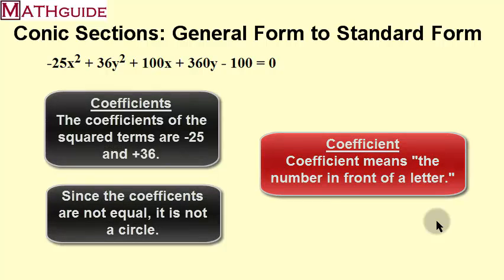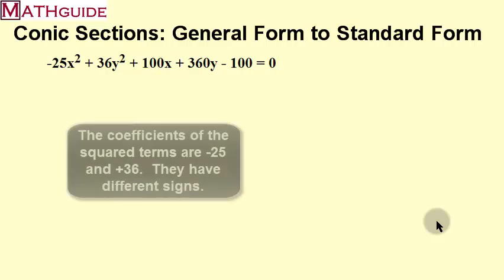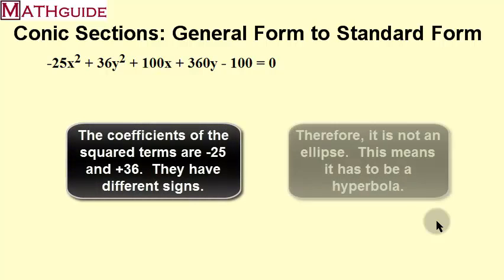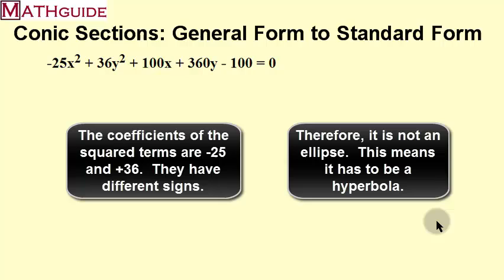If it's an ellipse, the coefficients of the squared terms will have the same sign. Well, they don't have the same sign, so we're left with a hyperbola. It's got to be a hyperbola because the squared terms have coefficients with different signs.